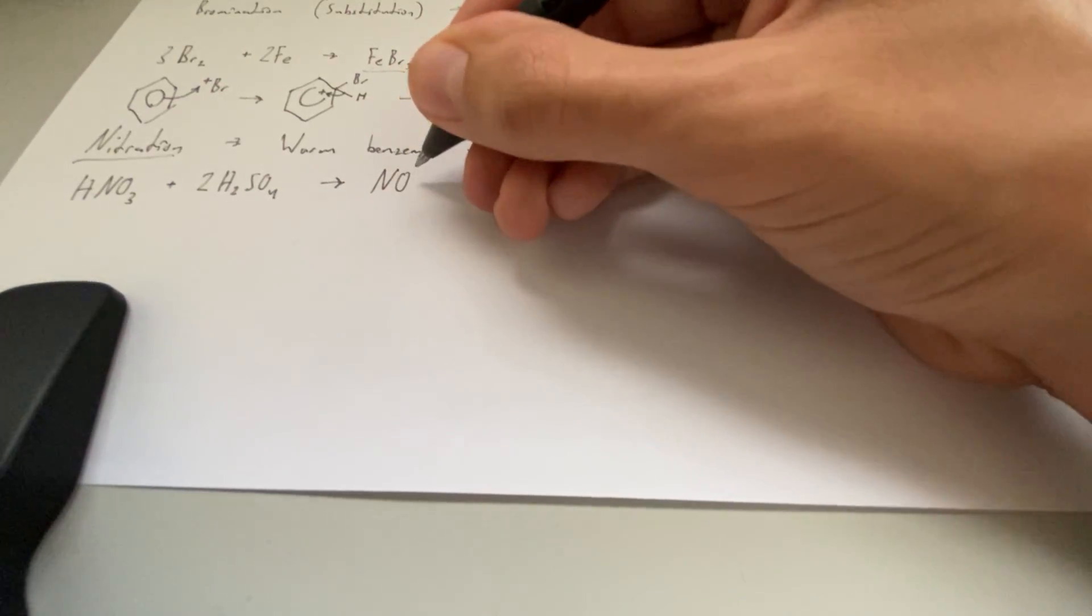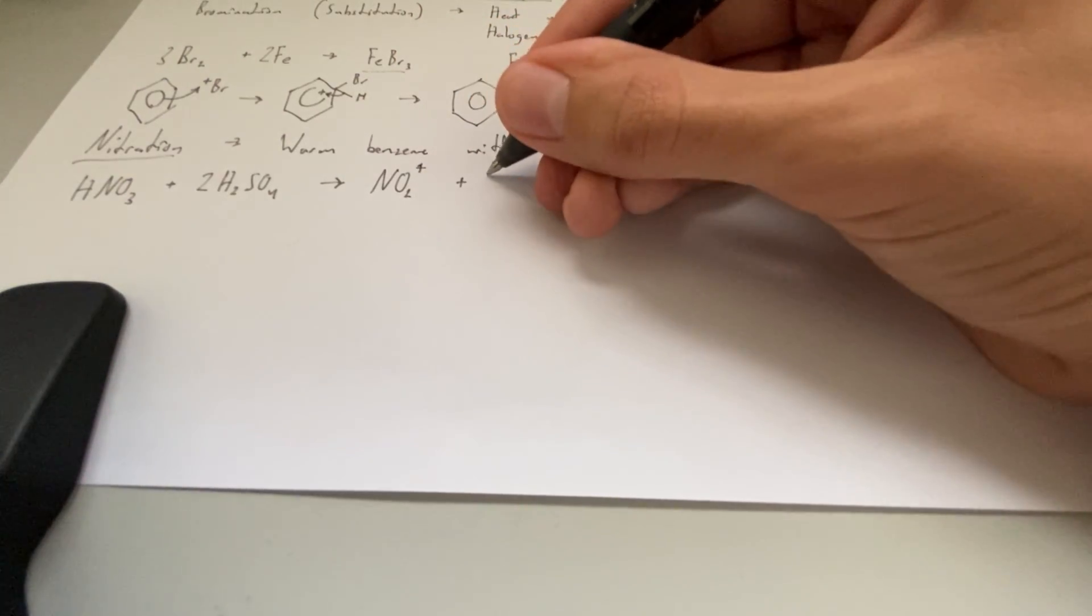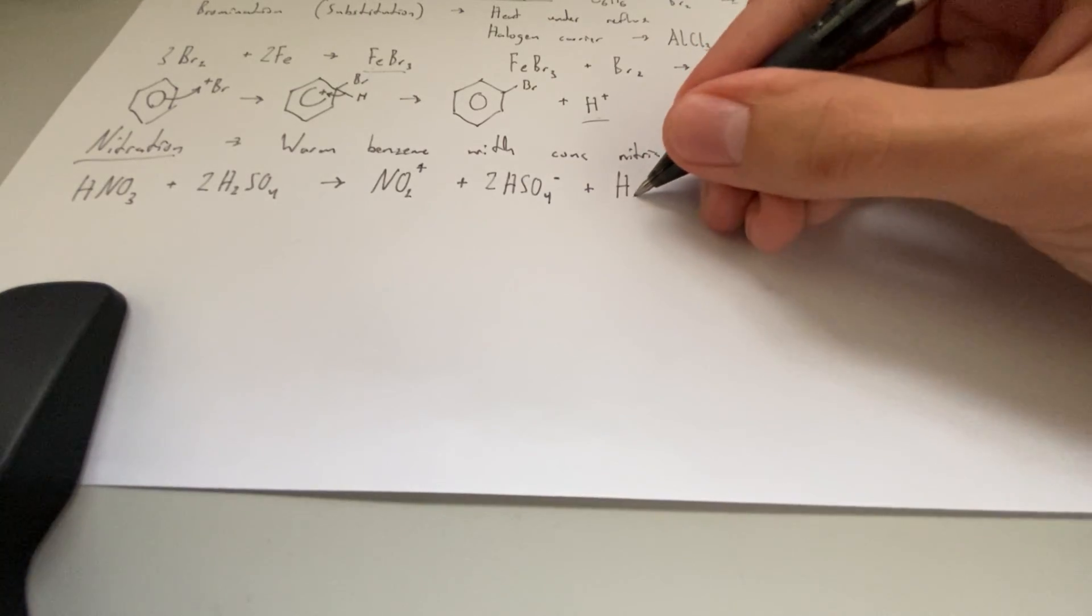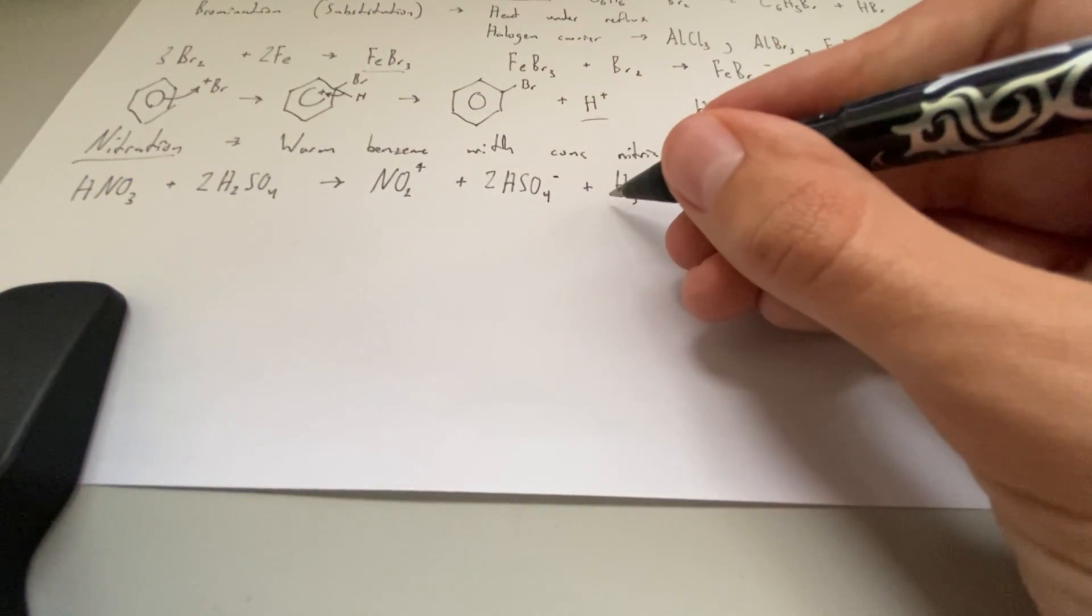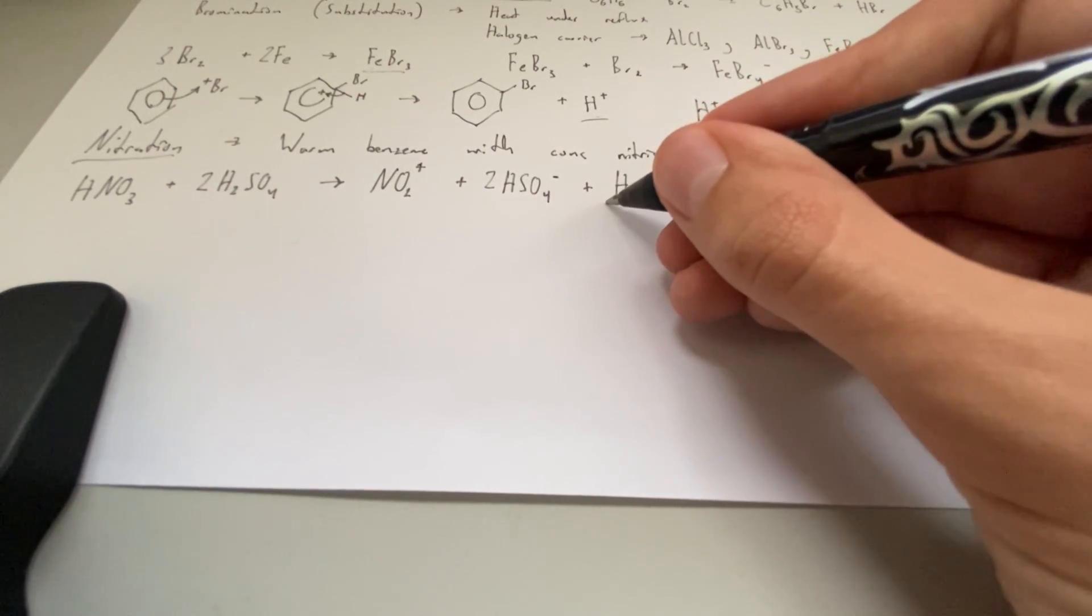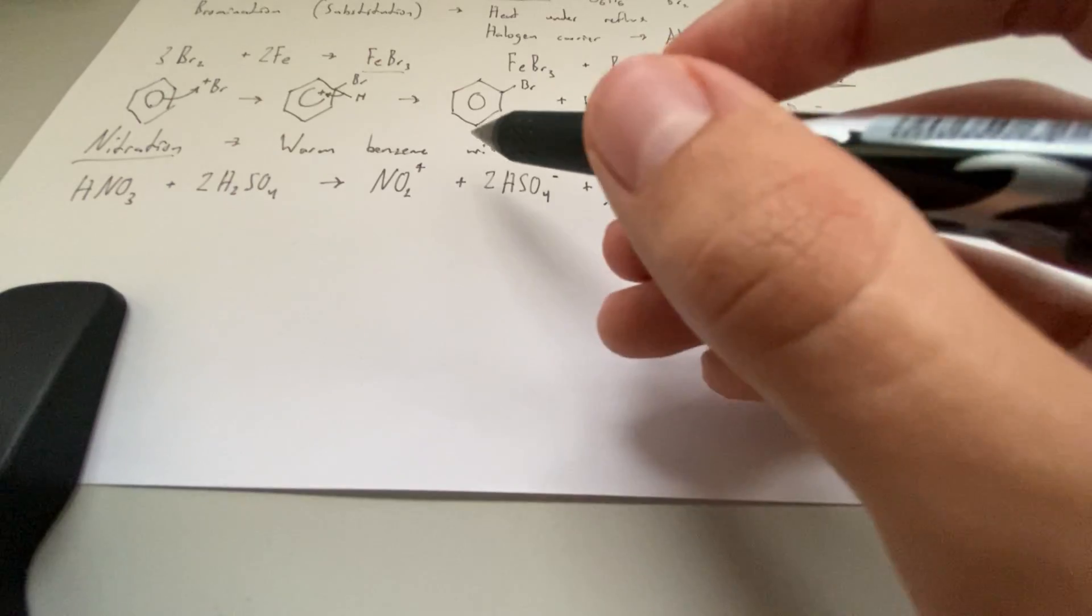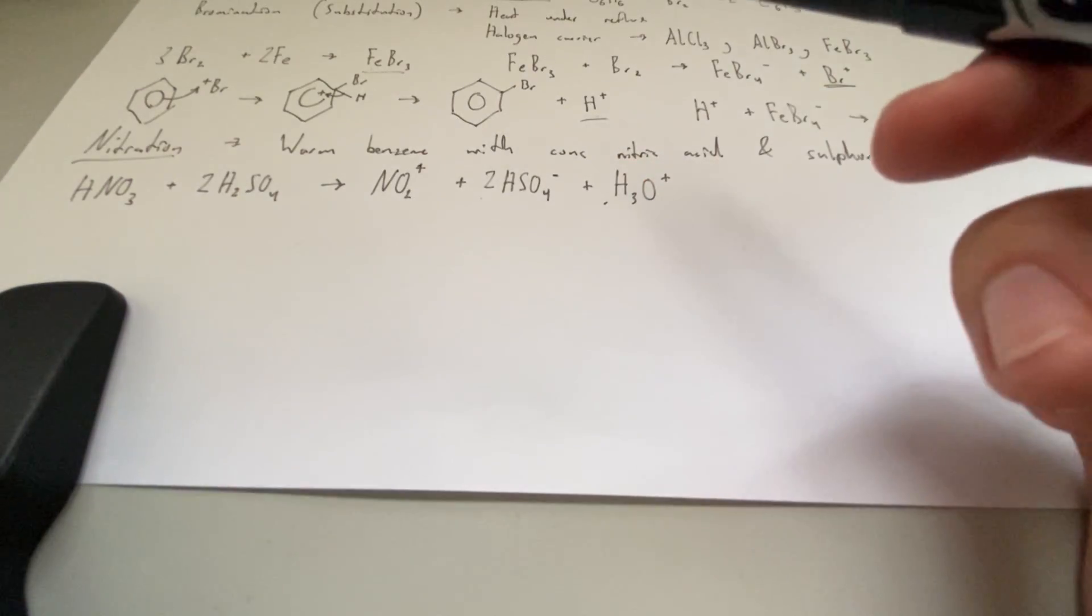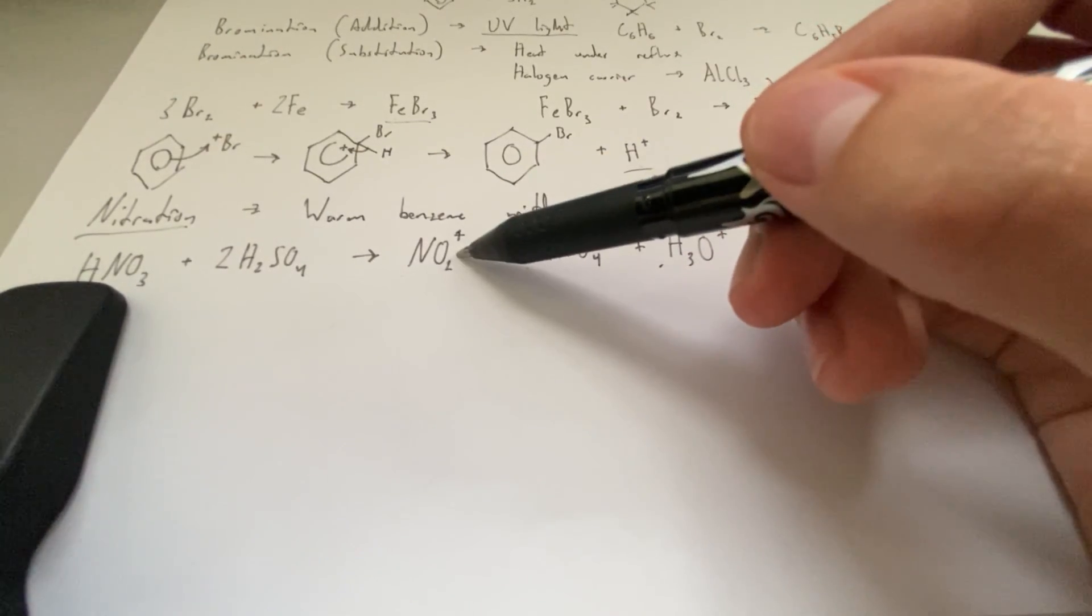So we have nitric acid, HNO3. We're going to get sulfuric acid, H2SO4. And this is going to give us our nitrate ion, NO2 plus. This is a hydronium ion now. This apparently could actually act like an electrophile, but it's unlikely in this reaction, so we're just going to ignore it.